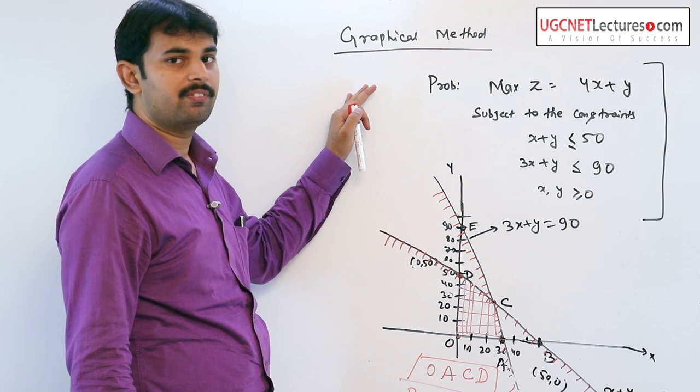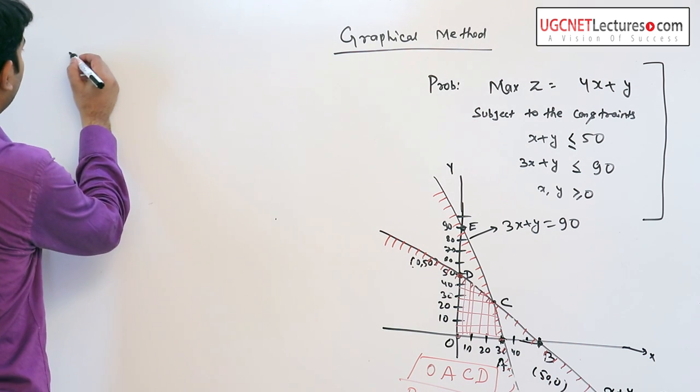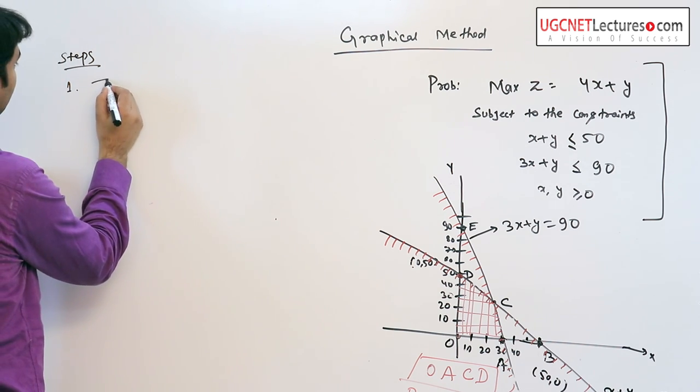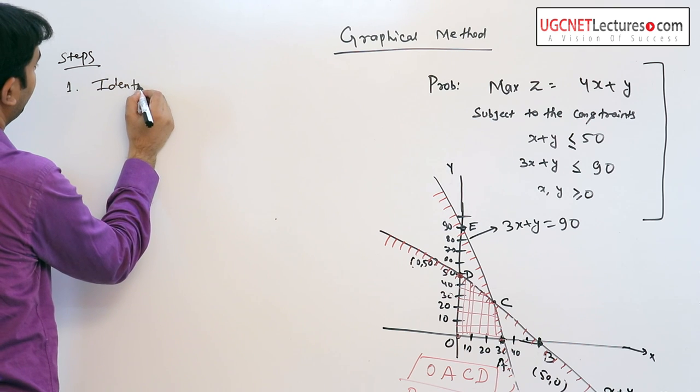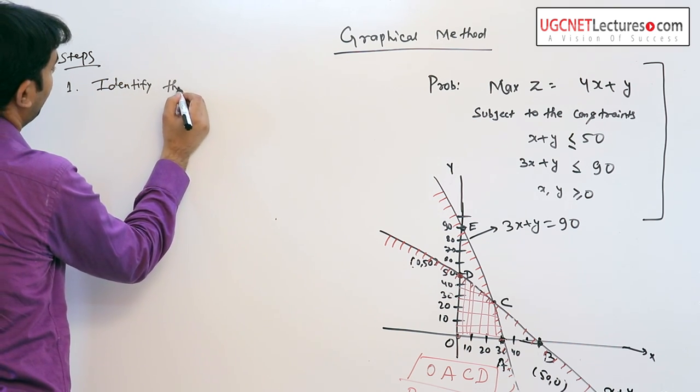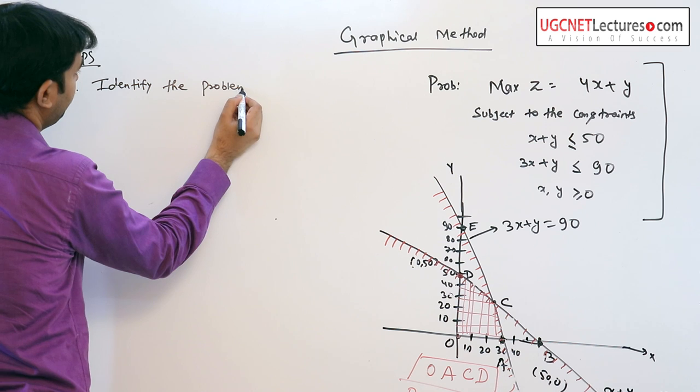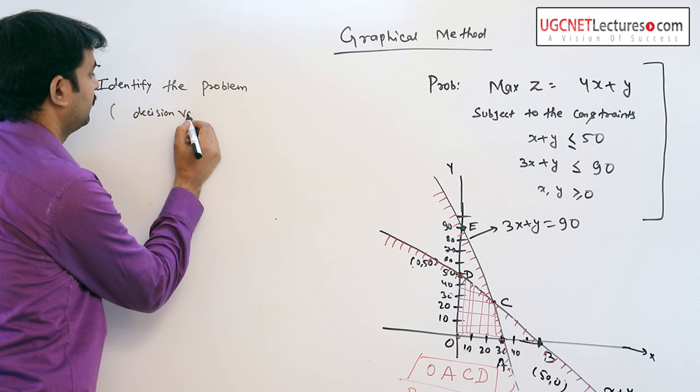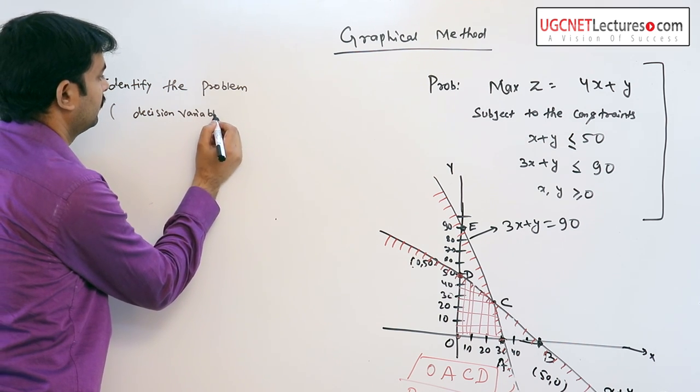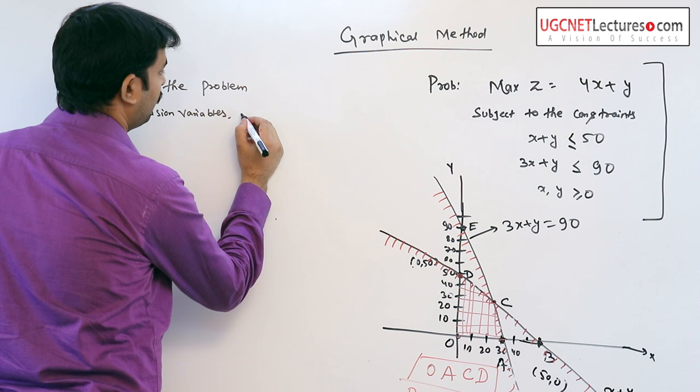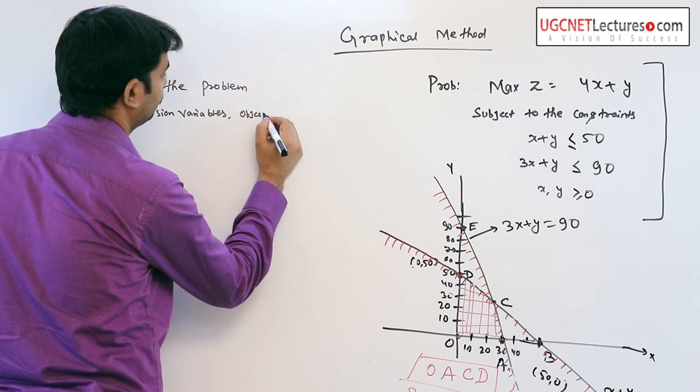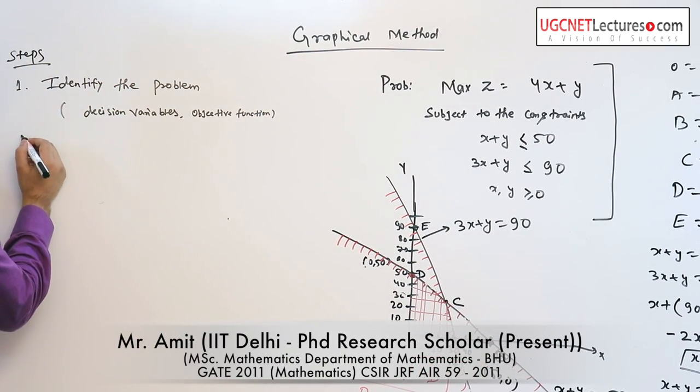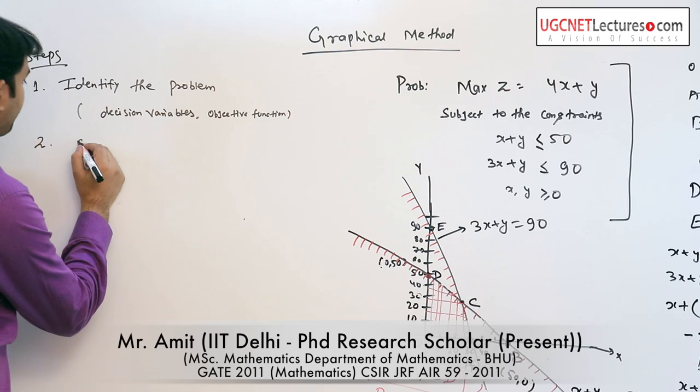The steps of the graphical method: First, identify the problem - what are the decision variables and what is the objective function? Second, set up the mathematical formulation.